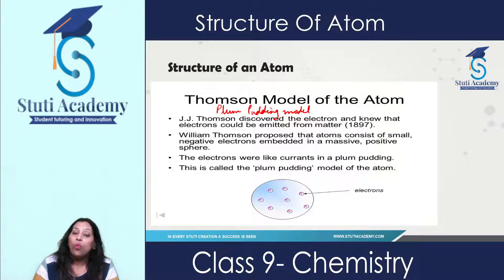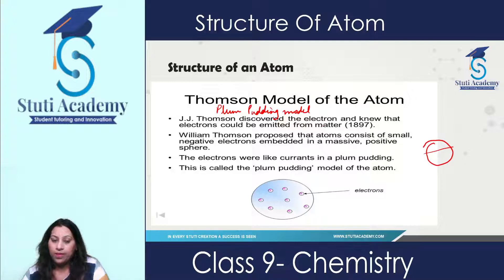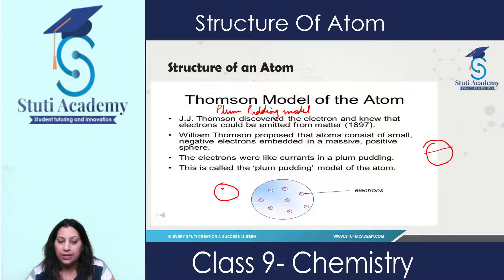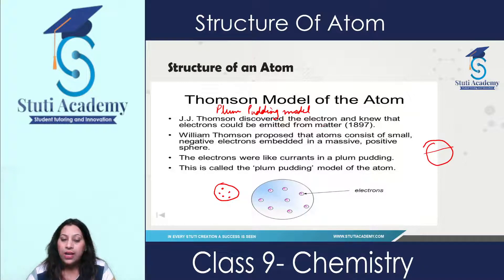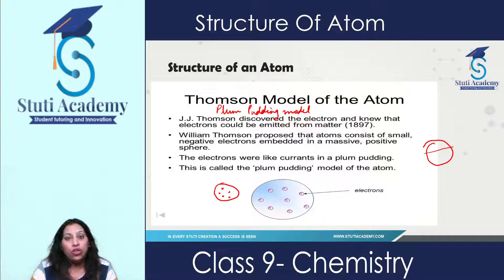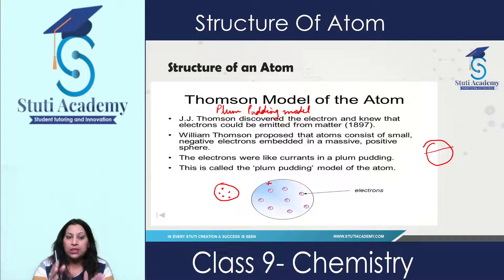We can also compare this model with a watermelon. If you take a slice of watermelon and cut it into a hemisphere, the seeds inside represent the electrons embedded in the sphere. In Thomson's model, the atom is a complete sphere in which electrons are embedded — as you can see in this diagram. These electrons are embedded in the sphere part of the atom. According to this model, the atom consists of small negative electrons in a massive positive sphere — meaning the entire sphere contains positive charge, and electrons are embedded into it.